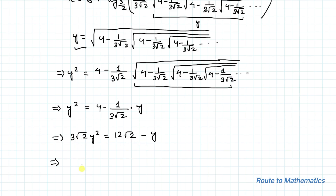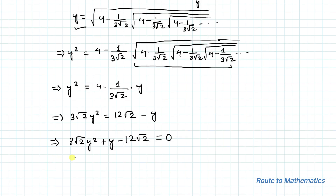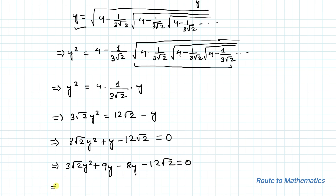Taking all terms to the left-hand side: 3√2 · y² + y − 12√2 = 0. This is a quadratic equation. We factorize using the middle term splitting method. 3√2 multiplied by 12√2 equals 72, and the factors of 72 are 9 and 8. So we write 3√2 · y² + 9y − 8y − 12√2 = 0. Taking 3y common gives (√2·y + 3), and taking 4√2 common gives (y + 3), yielding the factored form.